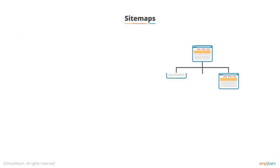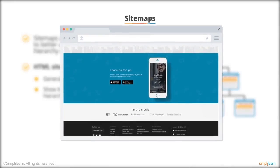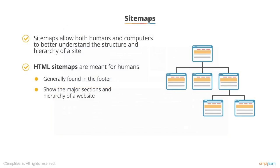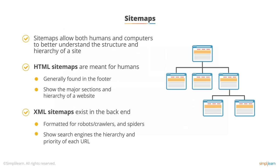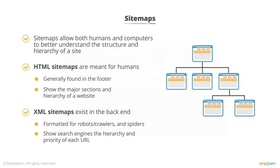The next on-site signal is sitemaps. There are two kinds: ones for humans and ones for robots or crawlers. The ones for humans are called HTML sitemaps — you've probably seen these in the footer of a website. They show you the major sections of a website and usually provide some search functionality, helping you understand the hierarchy as a human. There's also something on the back end called an XML sitemap. It's formatted for computers, so it's not easy to read, but it uses XML format to show the hierarchy and priority of each URL on your website so that search engines can understand how everything is interconnected.